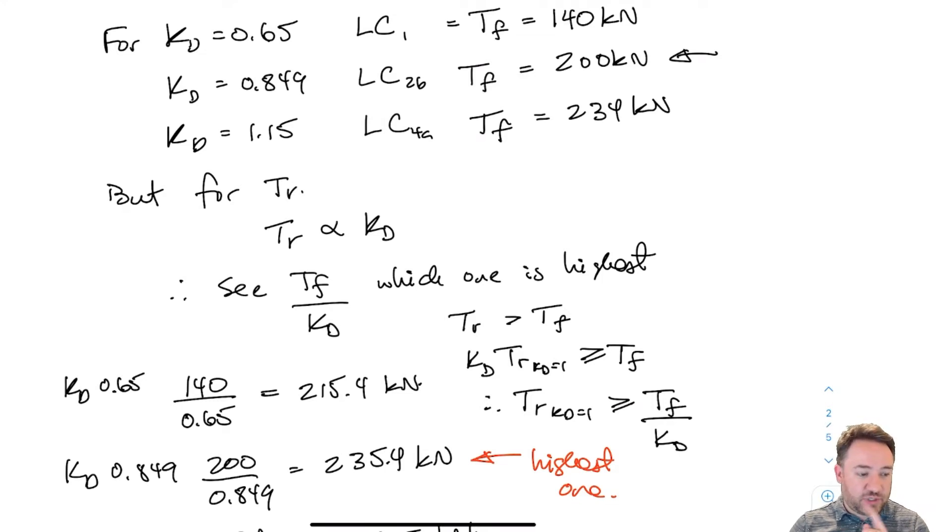This wouldn't work for compression design. For compression design I have to do three different calculations for resistance, one for each different KD, and then compare all three separately. Unfortunately, that's necessary because in compression parallel resistance, the resistance is not linearly proportional to KD, but for tension it is.